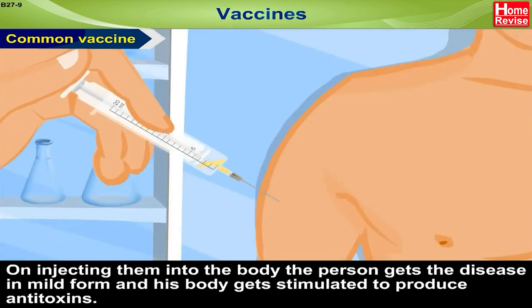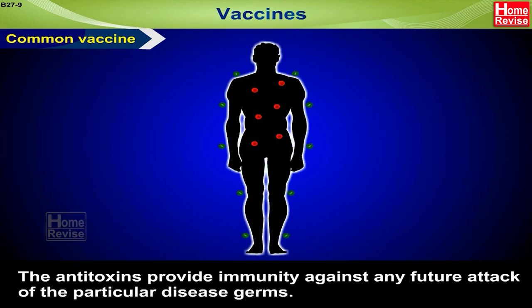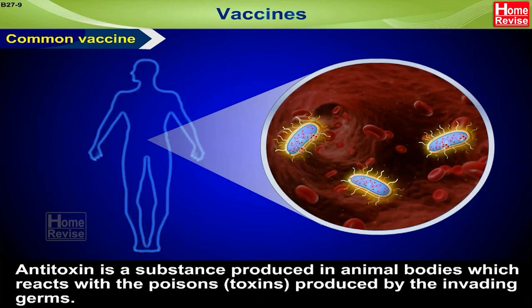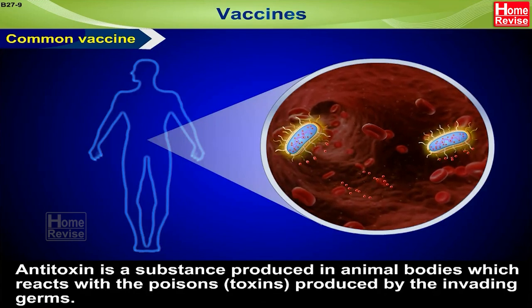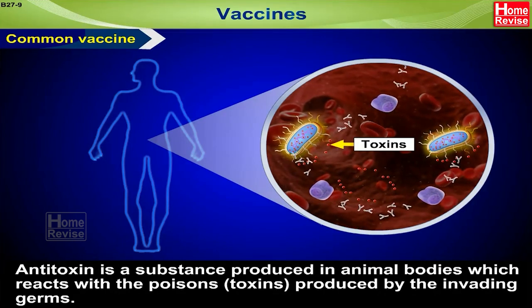On injecting them into the body, the person gets the disease in mild form and his body gets stimulated to produce antitoxins. The antitoxins provide immunity against any future attack of the particular disease germs. So, antitoxin is a substance produced in animal bodies which reacts with the poisons or toxins produced by the invading germs.